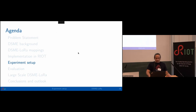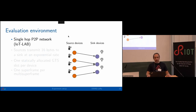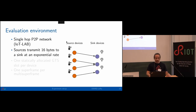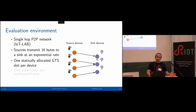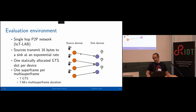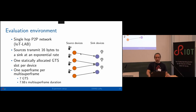For the experiment setup, we set up a single-hop peer-to-peer network on IoT-Lab. This network has source devices and sink devices. The source transmits 16 bytes of payload to the sink at an exponential rate. We allocate one guaranteed time slot per device during bootstrap. For the experiment, we configure one superframe per multi-superframe, which gives seven guaranteed time slots, each with 16 channels and 7.68 seconds of multi-superframe duration.